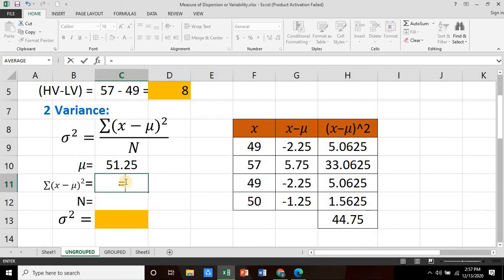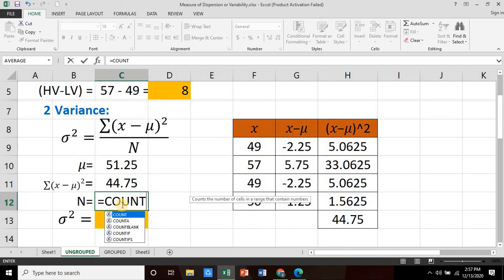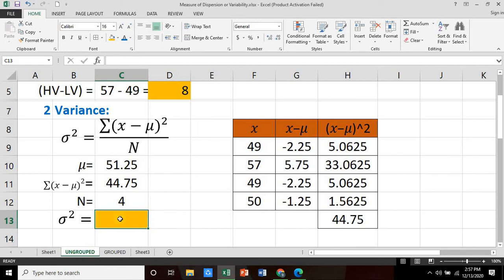So in this value, this is equal to 44.75. And the total number of our observation is 4. You can also apply the count formula. That's equals COUNT, open parenthesis, and it will count the number of observation that is exactly 4. Now to compute for our variance, this is simply the quotient of 44.75 divided by 4.